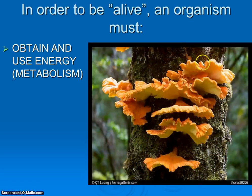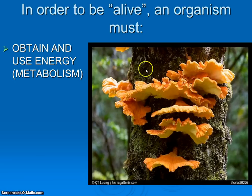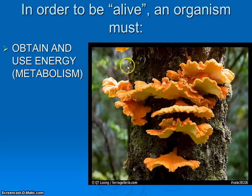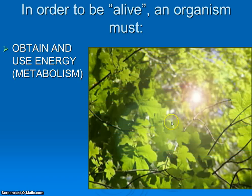Another quick example: this sulfur shelf, or chicken mushroom, grows off of trees. It doesn't produce its own food — it's actually breaking down carbohydrates and structures inside of the tree and gaining its energy and nutrition from the tree. That's a different example of obtaining and using energy. It doesn't matter how you follow this rule as long as you do it. Obviously, trees absorbing sunlight and undergoing photosynthesis to generate food and in turn make energy is another example we'll be looking at this year.